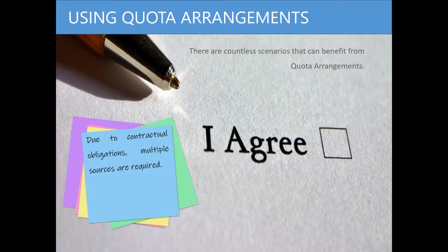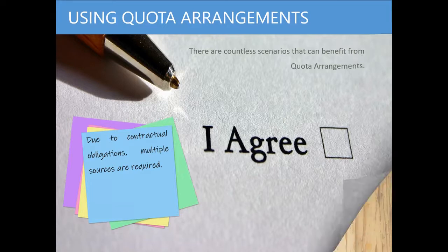Another scenario where a quota arrangement is helpful is to support contractual obligations. In other words, you have agreed with a supplier to buy a certain amount of product over a period of time in order to get a lower cost, but you need to also procure from a second source because there is a long-standing relationship.